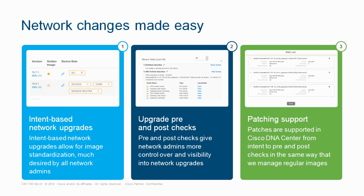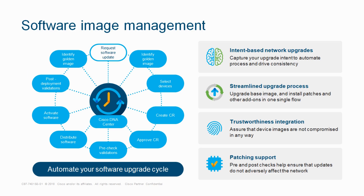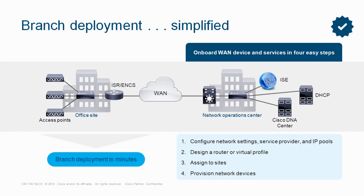For image management, if you want to do any upgrades, previously you would manually go to every switch. But now, if you set a golden image and any device is running a different image, it will automatically update once you provision those devices. It shows recent tasks performed and available patches. The workflow is: set the golden image, select devices, create a change request, upload, validate, distribute software, activate software, and post-deployment, verify all devices have the golden image.